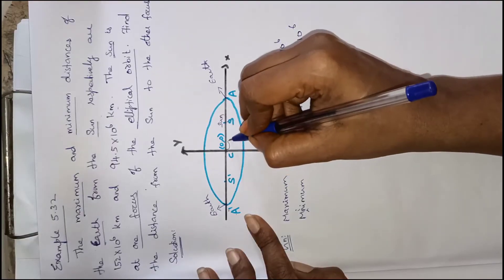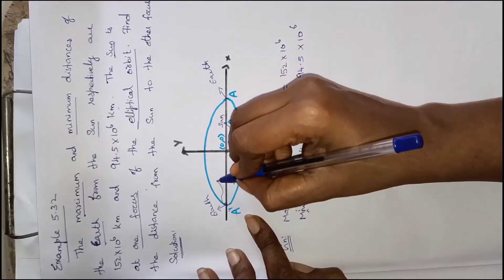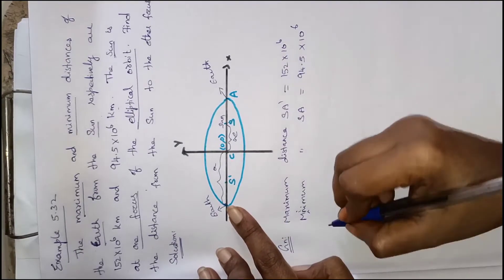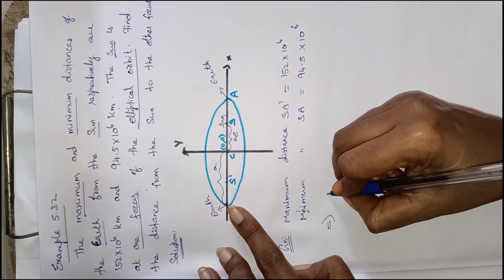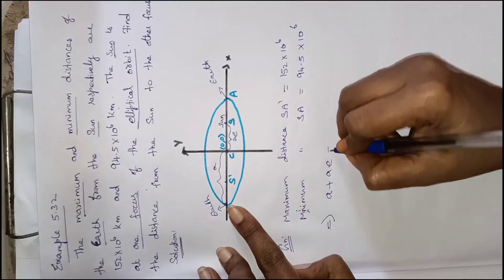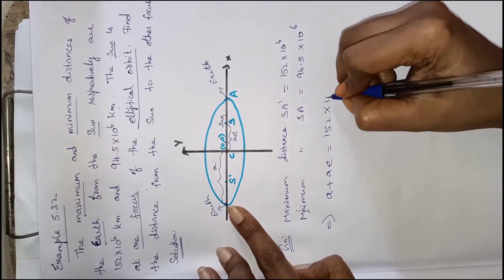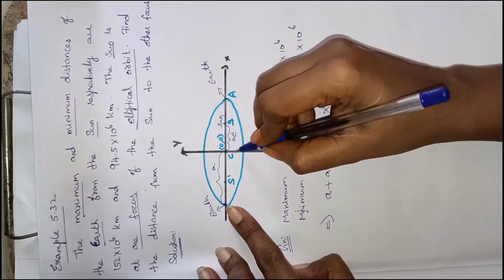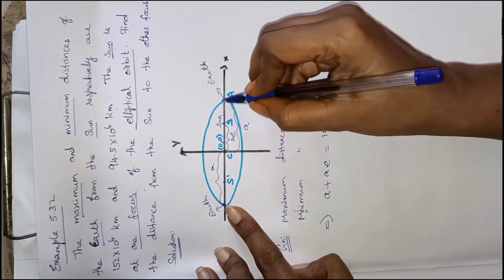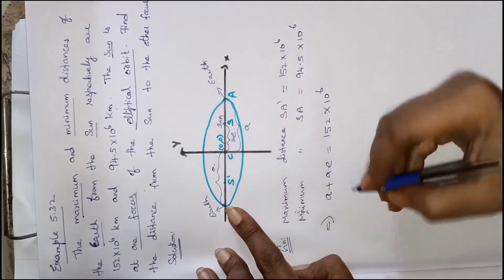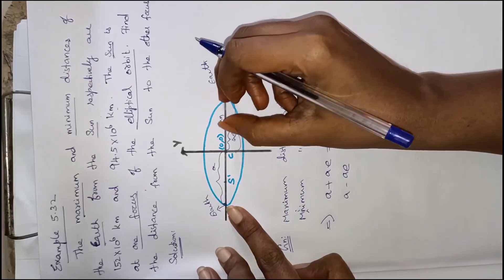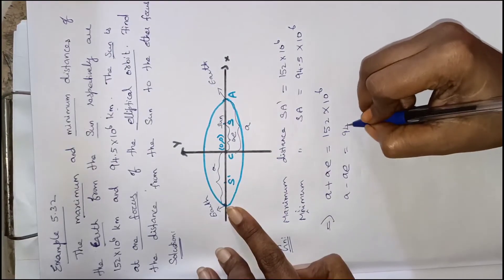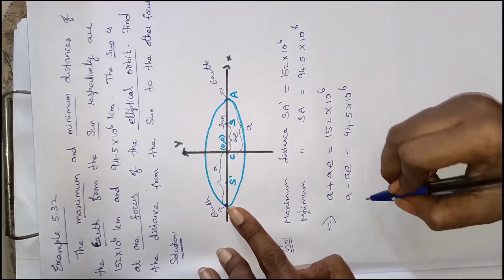Now SA' distance from the center and focus: the center to focus distance is ae, so SA' equals a plus ae, which is equal to 152 into 10 power 6. And SA distance equals a minus ae, which is equal to 94.5 into 10 power 6.